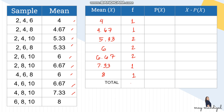The total frequency is 10. Now solve for probability by dividing each frequency by 10, giving: 0.1, 0.1, 0.2, 0.2, 0.2, 0.1, 0.1. The total of all probabilities should equal 1.